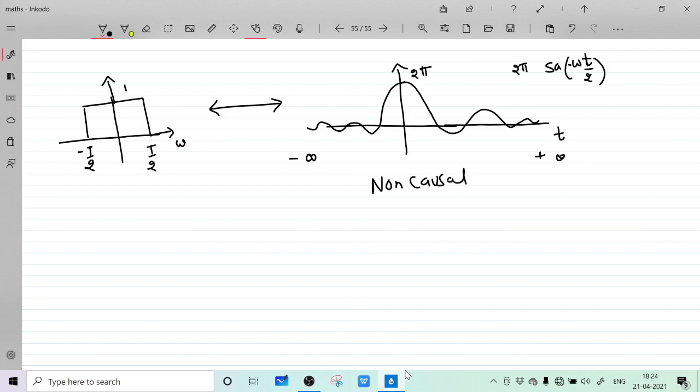Now let us talk about instability. If you integrate this signal from minus infinity to plus infinity, 2 pi sample of minus T by 2 dt, this is going to be infinity. We cannot determine this because it is an everlasting signal.